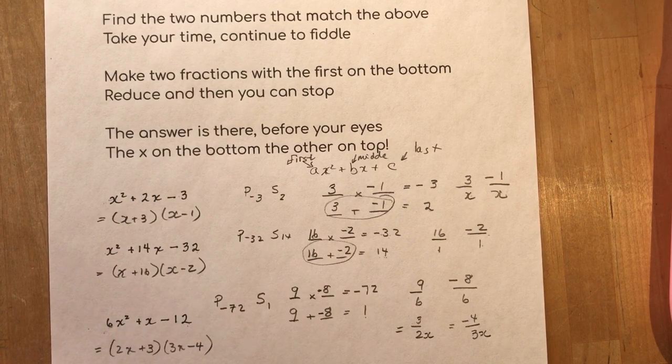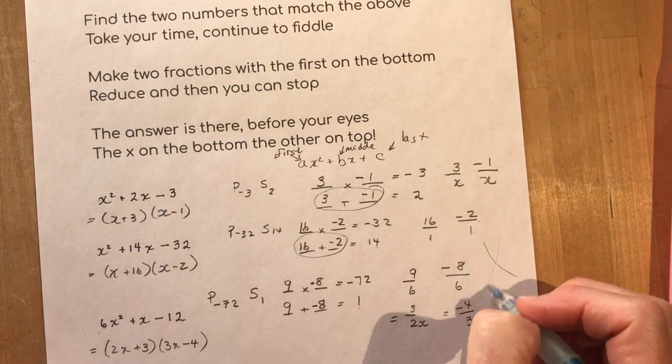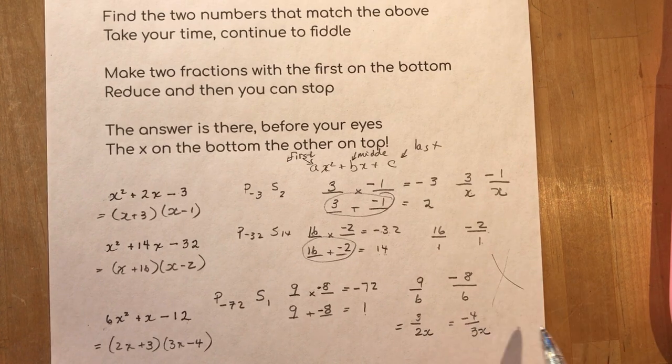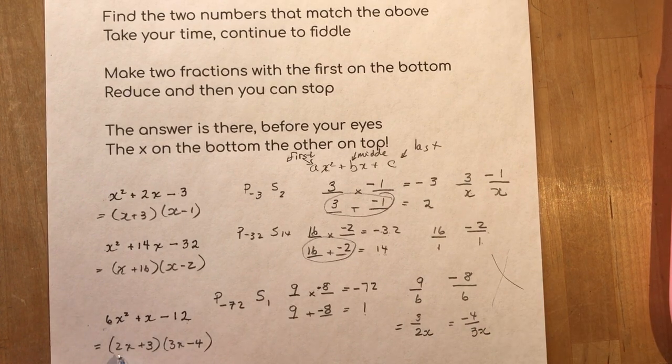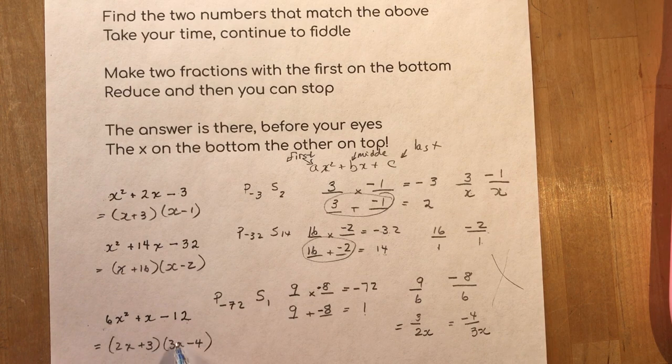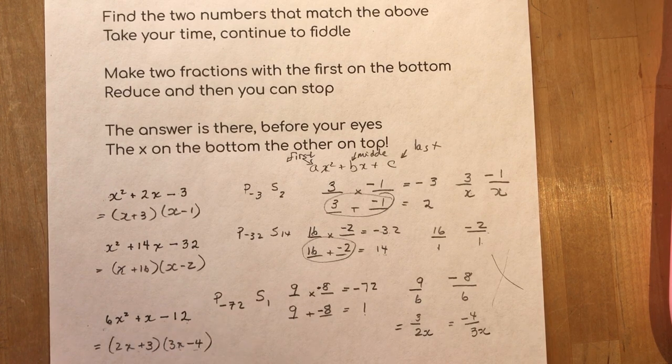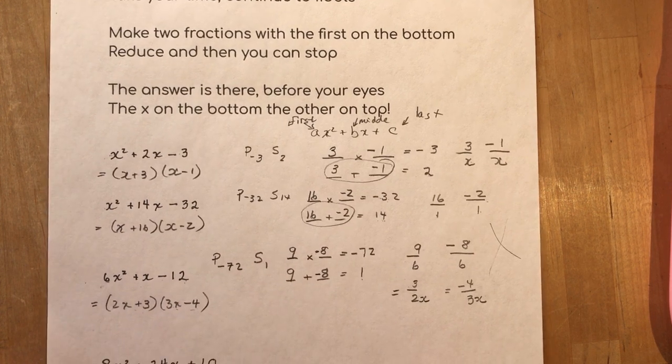Now I know some of you have done decomposition. Some of you they make these x's and all this stuff. You don't need to do that. It's this simple. Look 6x squared minus 8 plus 9 and minus 12. I'm right. You'll always be right when you do this method.